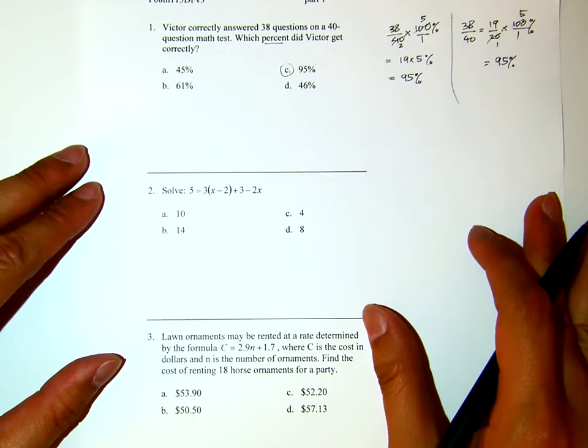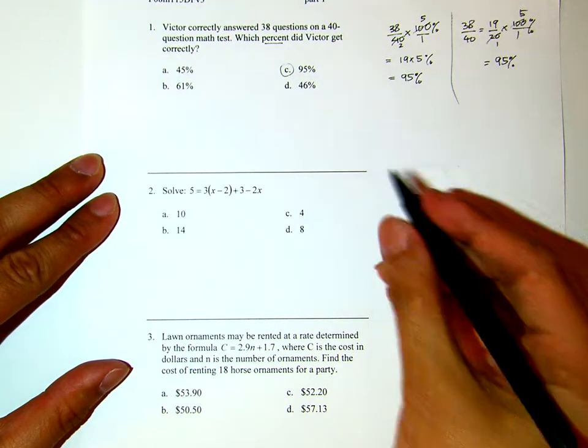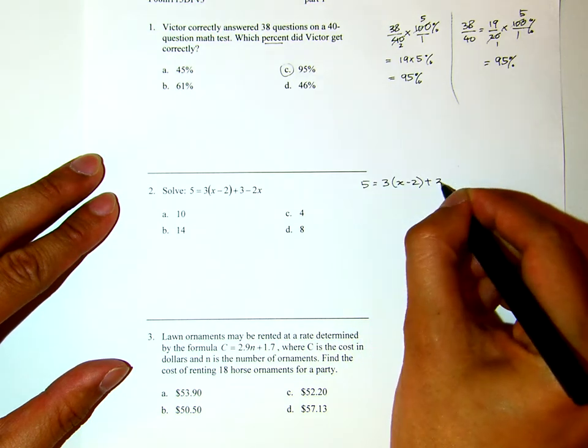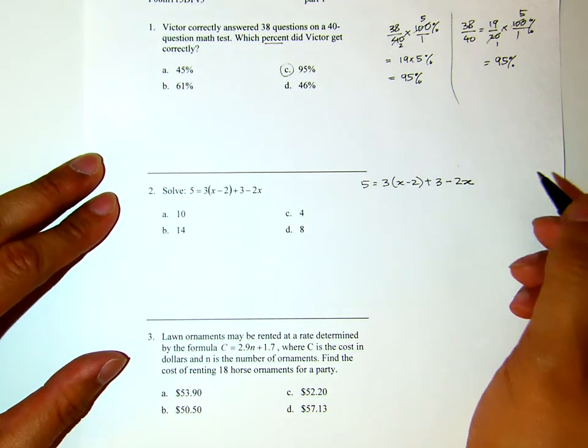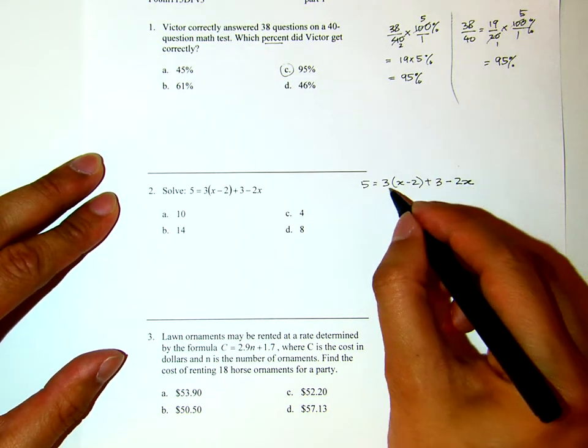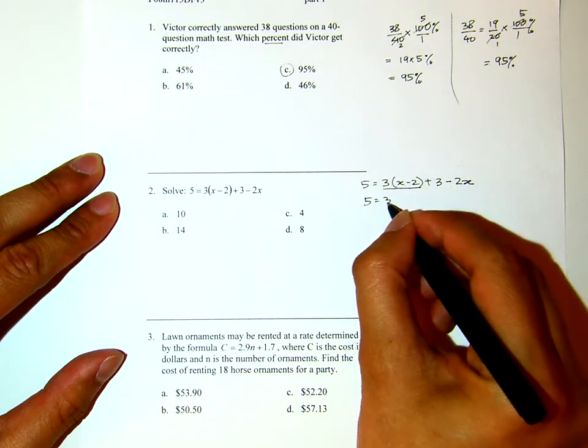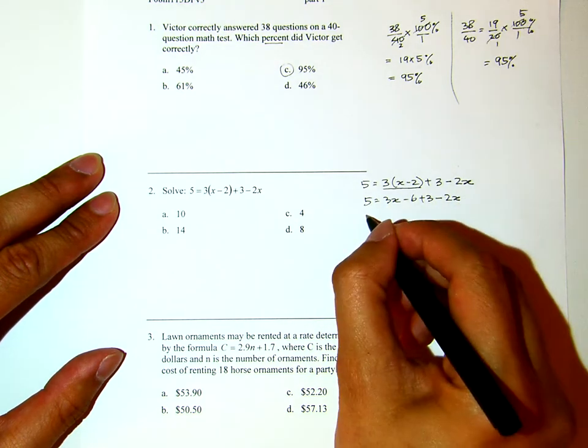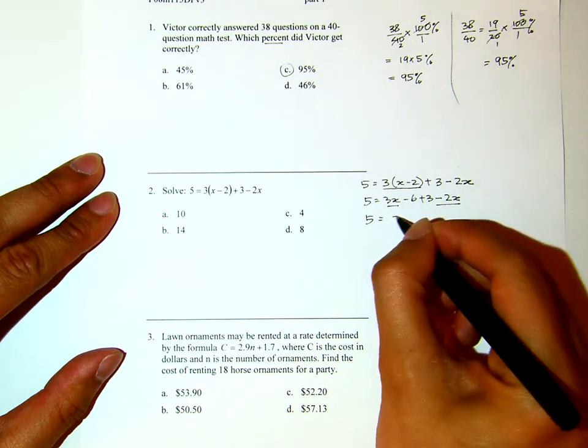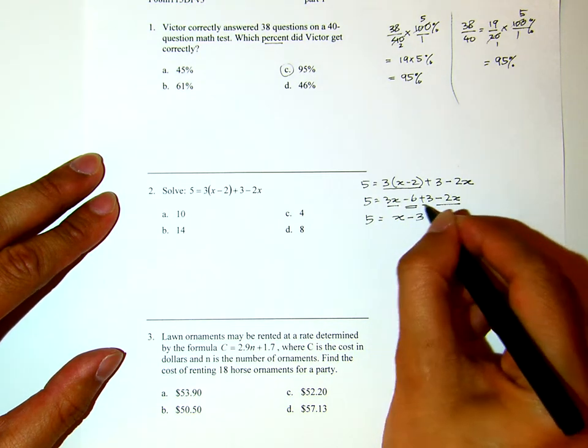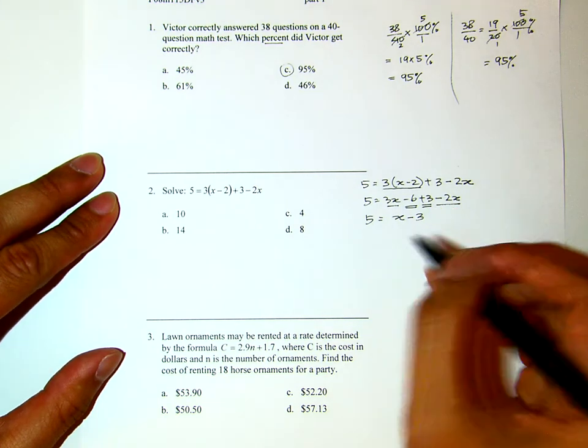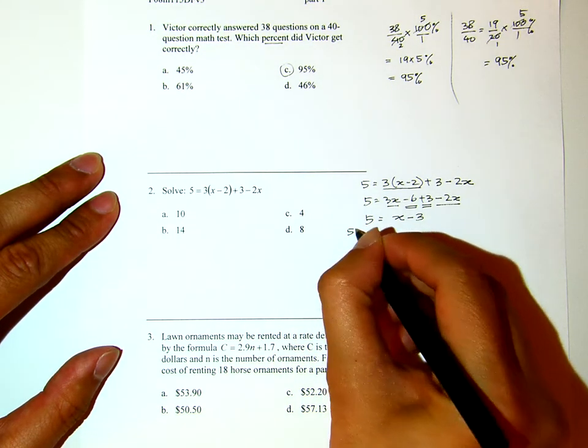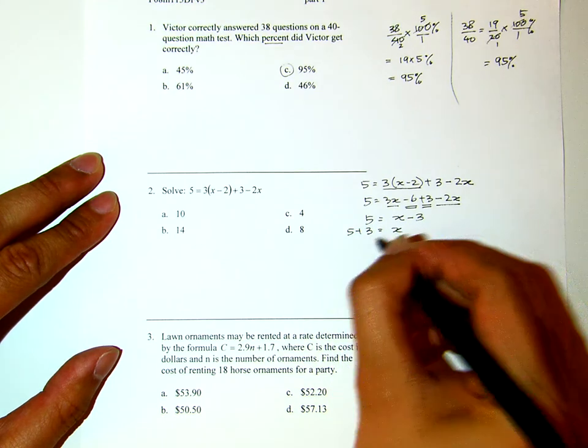Number 2. Solve this equation: 5 equals 3 times x minus 2 plus 3 minus 2x. What I will do first, I will distribute this, and then from there, I will combine like terms. And then, to solve for x, I will move the 3 to the other side. I will add by 3. So x equals to 8.